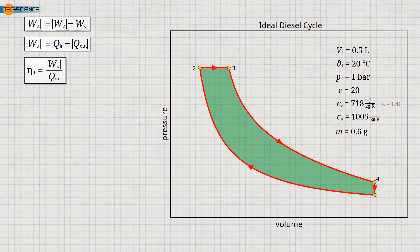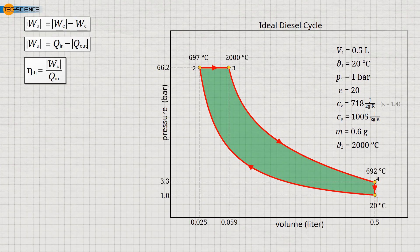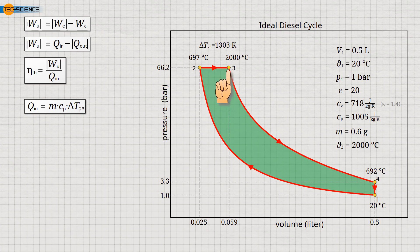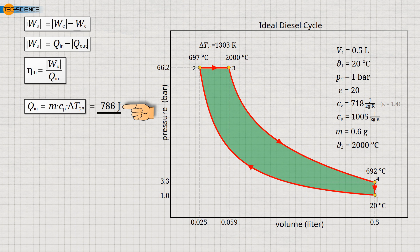In the following, we assume that the temperature rises to a maximum of 2000 degrees Celsius during combustion at state 3. The temperatures and pressures of the other states are given directly in the diagram and will not be calculated here. However, these values can be determined using the equations for the isentropic and isobaric processes. For practice, it is recommended that you calculate the temperatures and pressures in the various states yourself. First, the heat input during isobaric combustion is calculated using the given formula. Only the gas mass M, the specific heat capacity CP, and the temperature change during combustion from state 2 to state 3 are relevant. In our case, this temperature increase is 1303 kelvin. This results in a total heat input from the combustion of 786 joules.